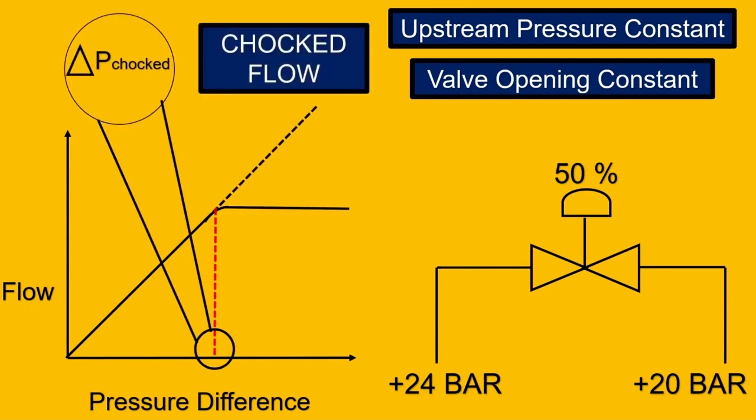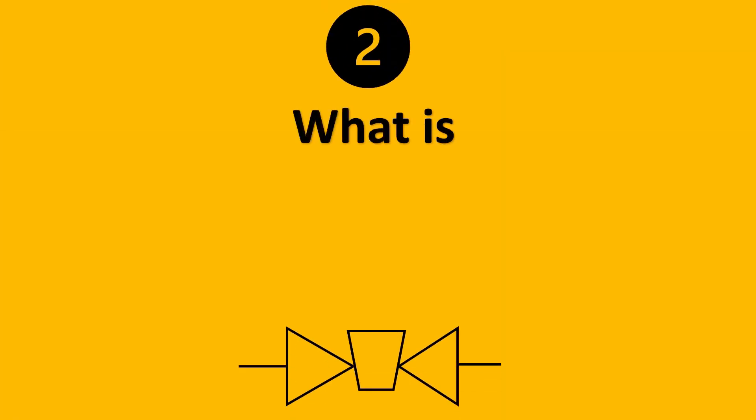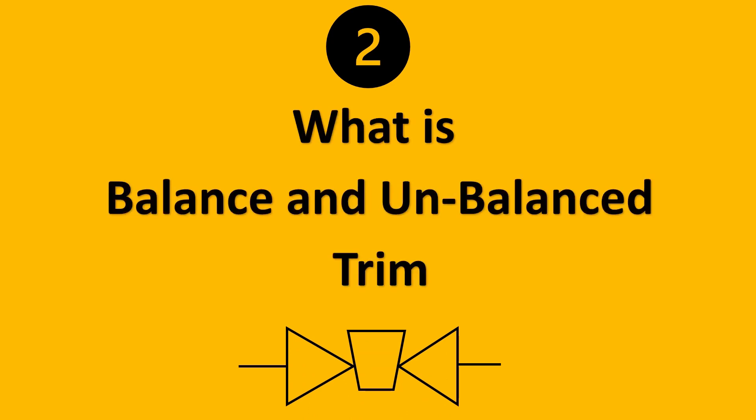This is against the ideal characteristics where the flow should increase, and this phenomenon is called choke flow. The next most asked question in interviews is what is balanced and unbalanced trim.